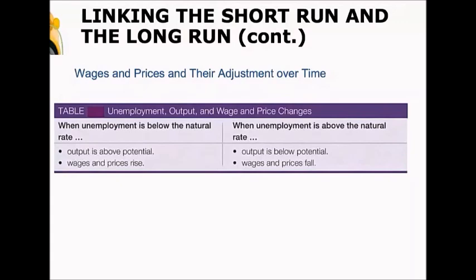When unemployment is below the natural rate, output is above potential. If output is above potential, unemployment is below the natural rate — in other words, we're hiring too many people. You can think of it as an excess demand for labor, and this is going to increase wages and increase prices.